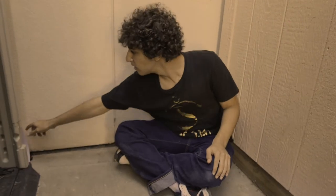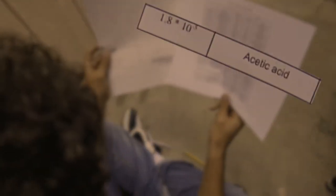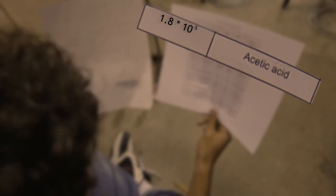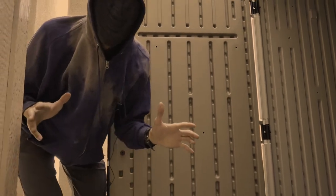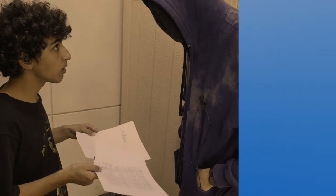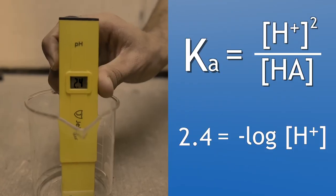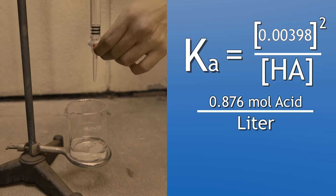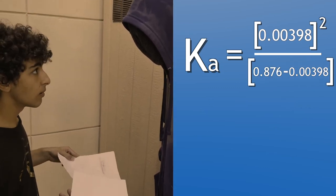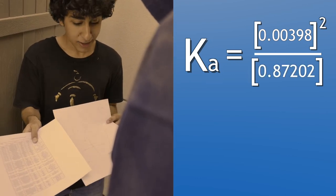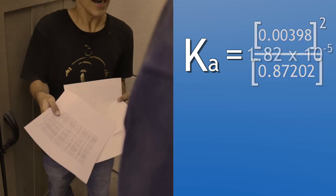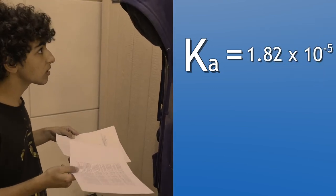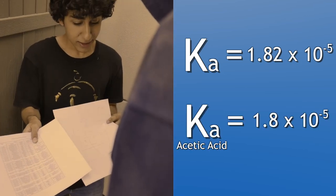By another stroke of luck, you spot a table of Ka values from many common weak acids hiding in a crack. You pick it up and search through it, and you find that acetic acid — the acid contained in vinegar — has a Ka of 1.8 times 10 to the negative 5. That's within the margin of error. Your captor returns to check on you, and you tell him it was acetic acid. You show him every step of your work: the equation for Ka and how you found each variable, how you measured the pH to find the molarity of hydrogen, how you used a burette to titrate the acid with sodium hydroxide to find the molarity of the acid, how you subtracted the molarity of the hydrogen from the molarity of the acid to obtain the molarity of the undivided acid, and how your Ka value matches the table's value for acetic acid.